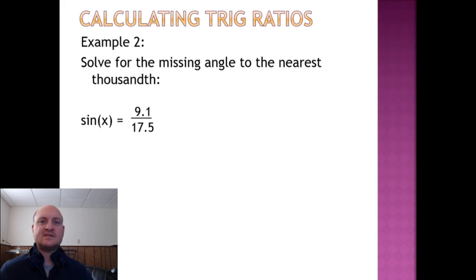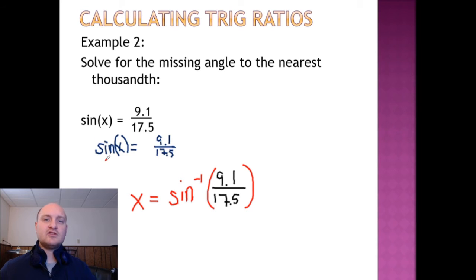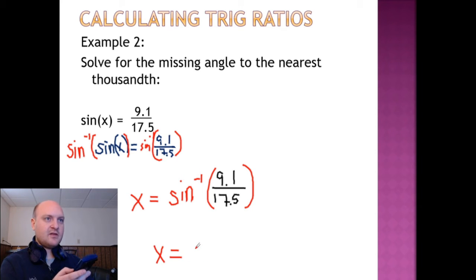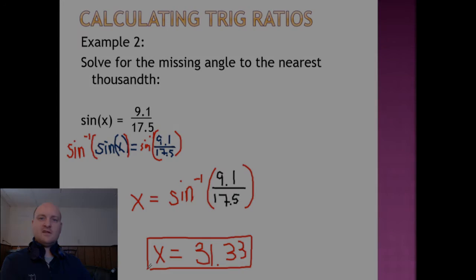Here we're given a sine ratio, which we must solve for the missing angle. Again, I'll need sine inverse of the ratio 9.1 over 17.5 because when we look at the original equation, I must apply sine inverse to both sides of the equation. When I plug this one into my calculator, I get 31.33, which represents our final answer.